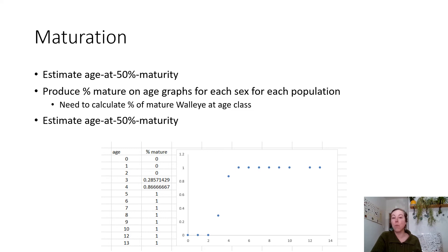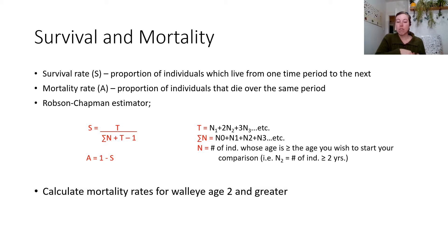Looking at survival and mortality rates, we're going to calculate how many fish we have in our population that are age one, how many are two, three, four, five, and you will use that data to figure out what the mortality rate is. It's tedious because you have to count all the fish, but it's not difficult. With this one, you'll combine the sexes, but you still have to do it for both populations.